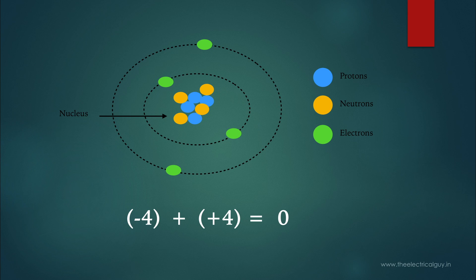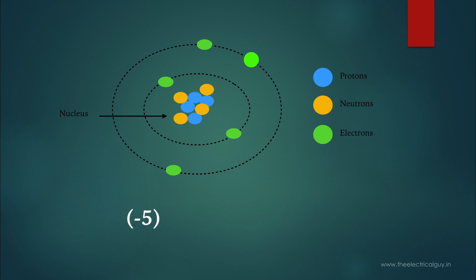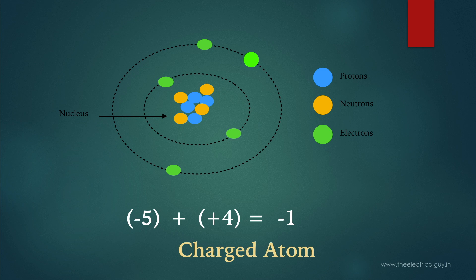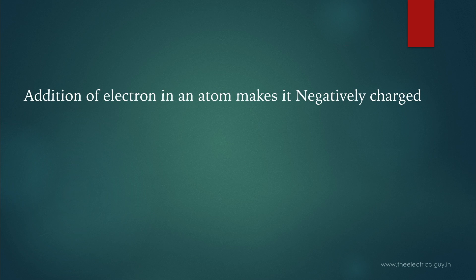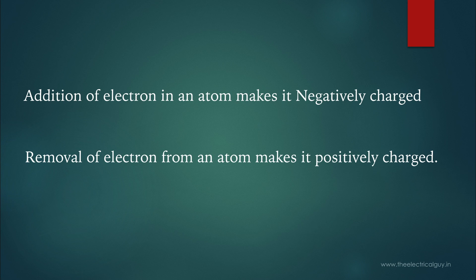An atom is stable only if the number of protons equals the number of electrons. If we add or remove any electron from an atom, it becomes unstable and is now ready to give or take electrons from another unstable atom to become stable again. For example, if we add one extra electron to our atom, the net charge becomes positive 4 plus negative 5, which equals negative 1. Since the net charge is not zero, the atom is unstable and will try to lose that extra electron. We call such unstable atoms charged atoms. Adding an electron makes the atom negatively charged; removing one makes it positively charged.